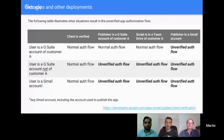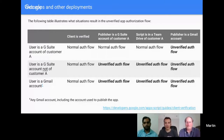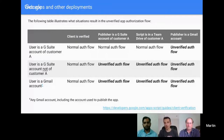You'll only get the unverified authentication flow if you're hitting certain sensitive scopes. If your script isn't using those scopes, you'll just get the normal authentication flow. If you've published a web app or any deployment using a Gmail account and it's using a sensitive scope, you are going to get the unverified auth flow — there's no way around that.